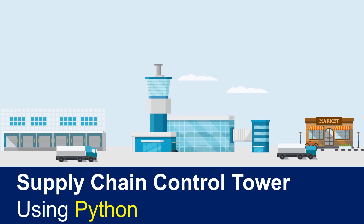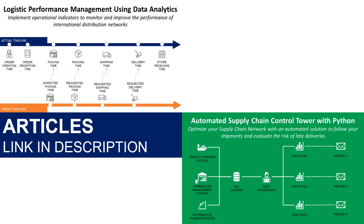Hello friends, welcome to this new tutorial. Today, we will design an automated supply chain control tower using Python. This video is inspired by two articles I published this summer — I have added the links in the description. Using an example of a global distribution network, we will see how we can use data analytics to follow shipments, perform root cause analysis, and automatically report the risk of late deliveries.